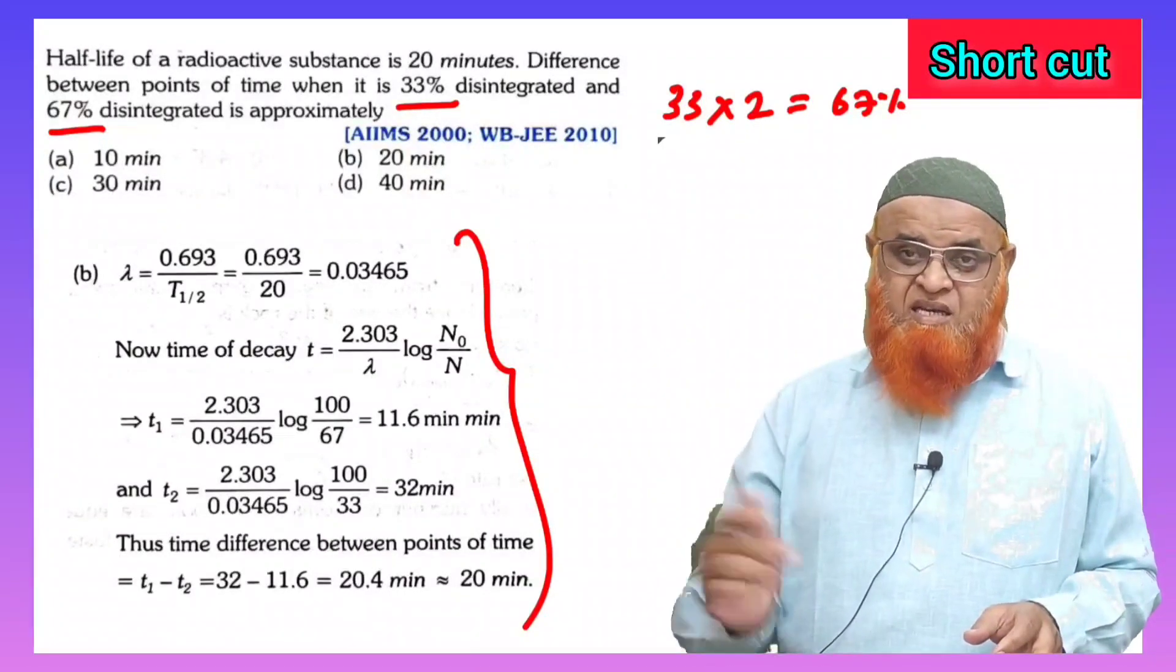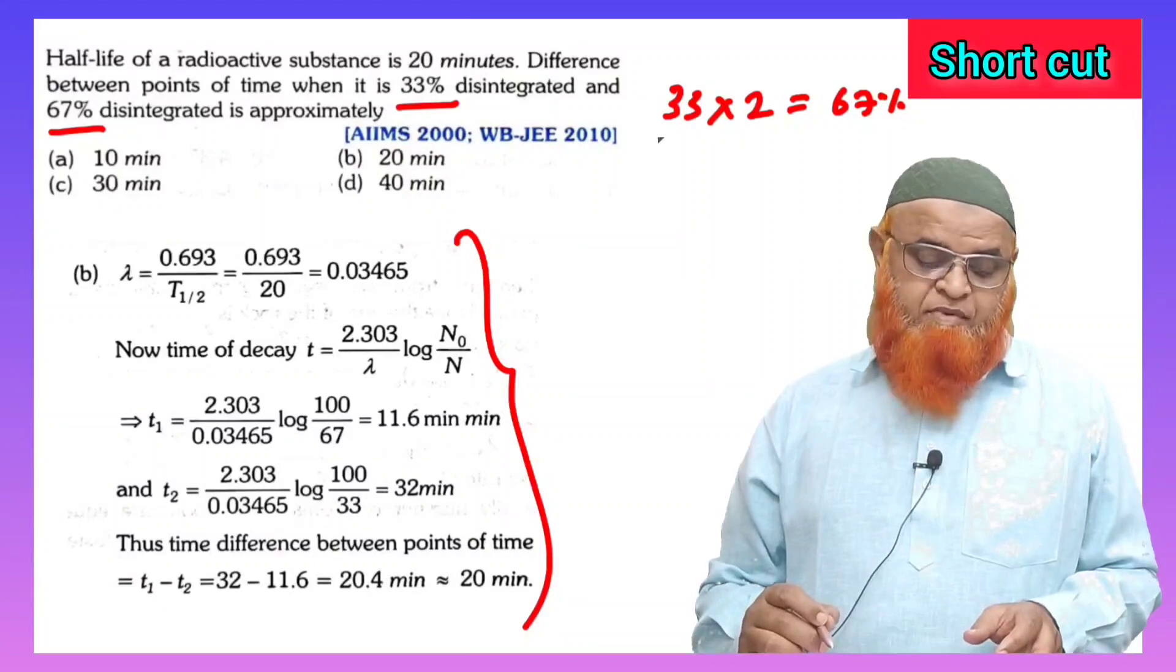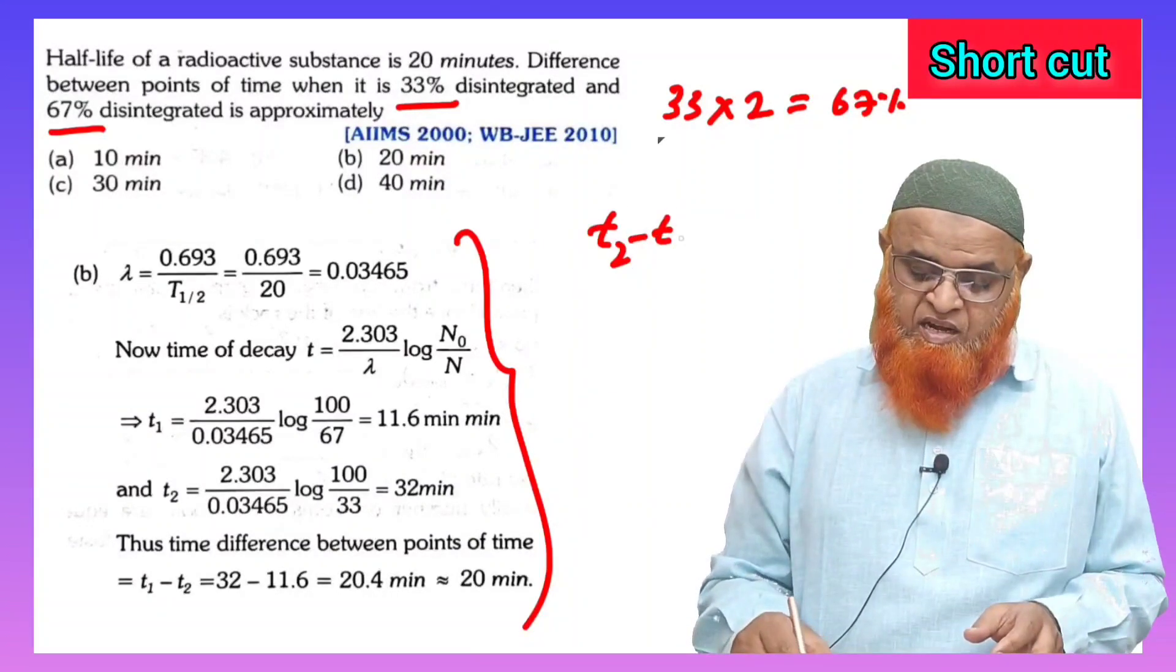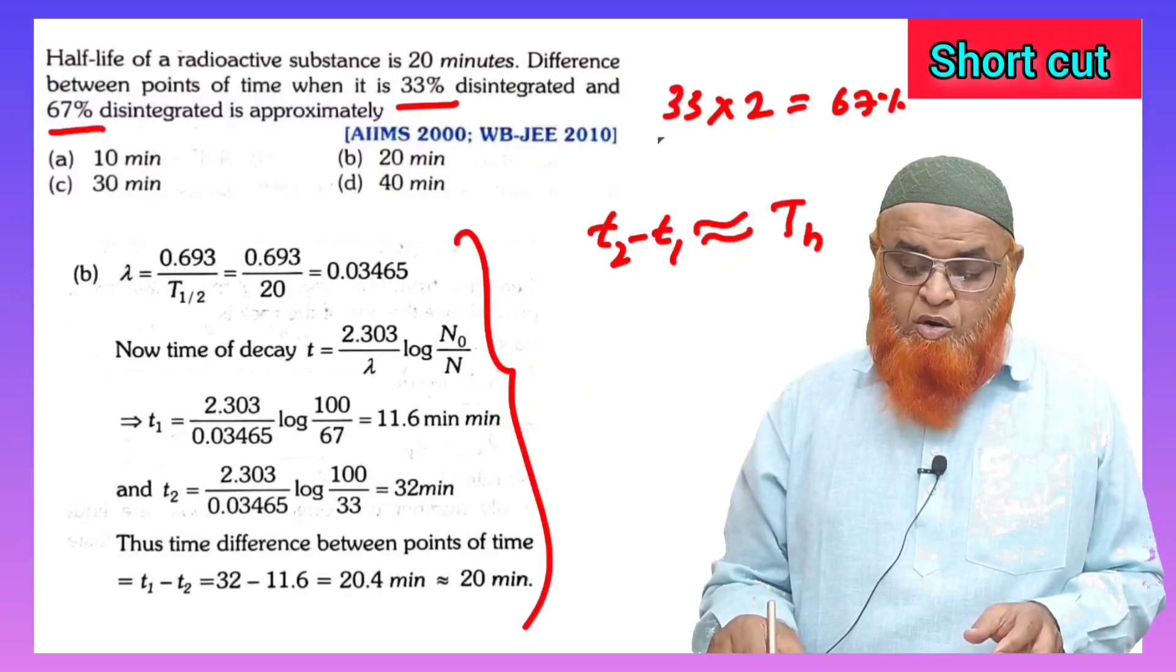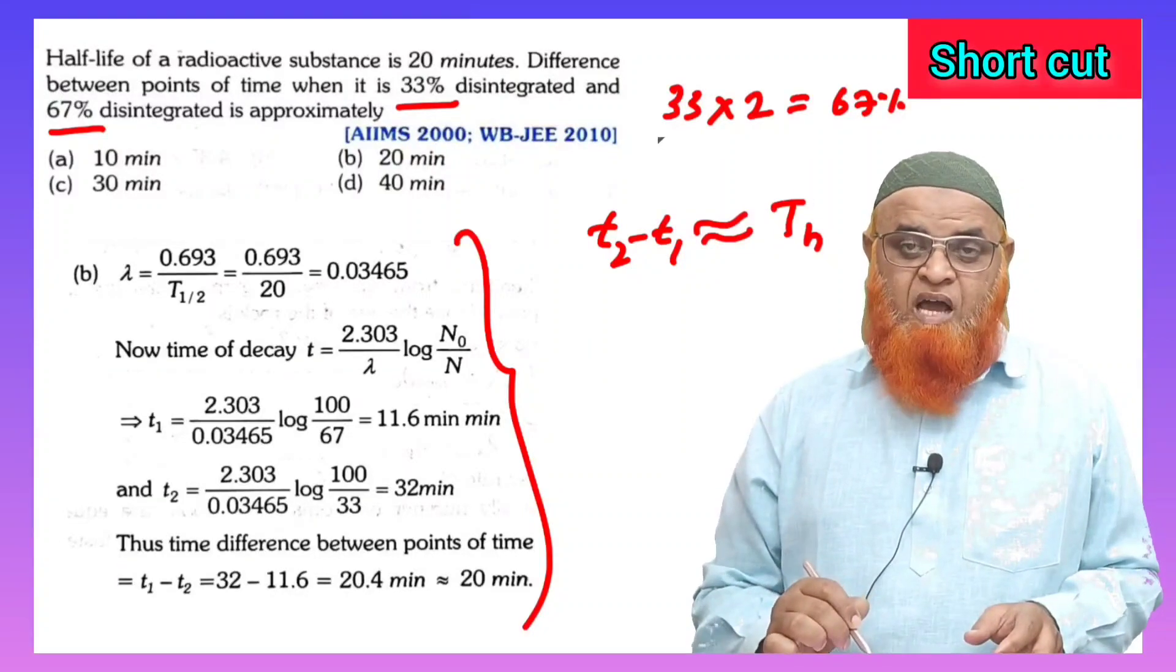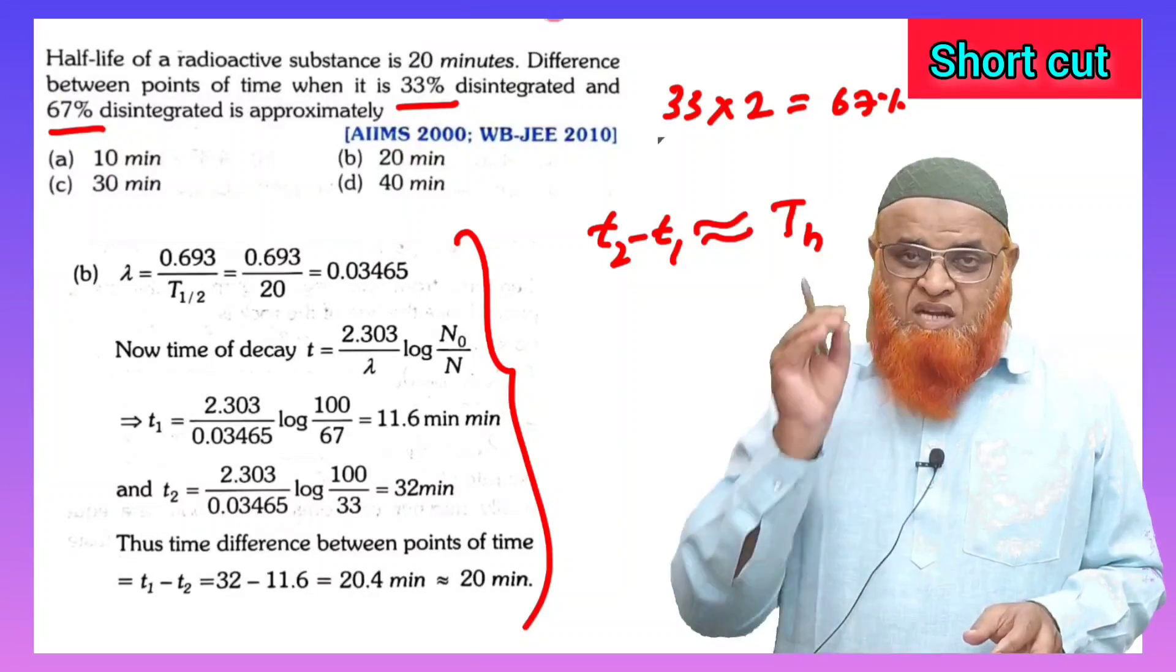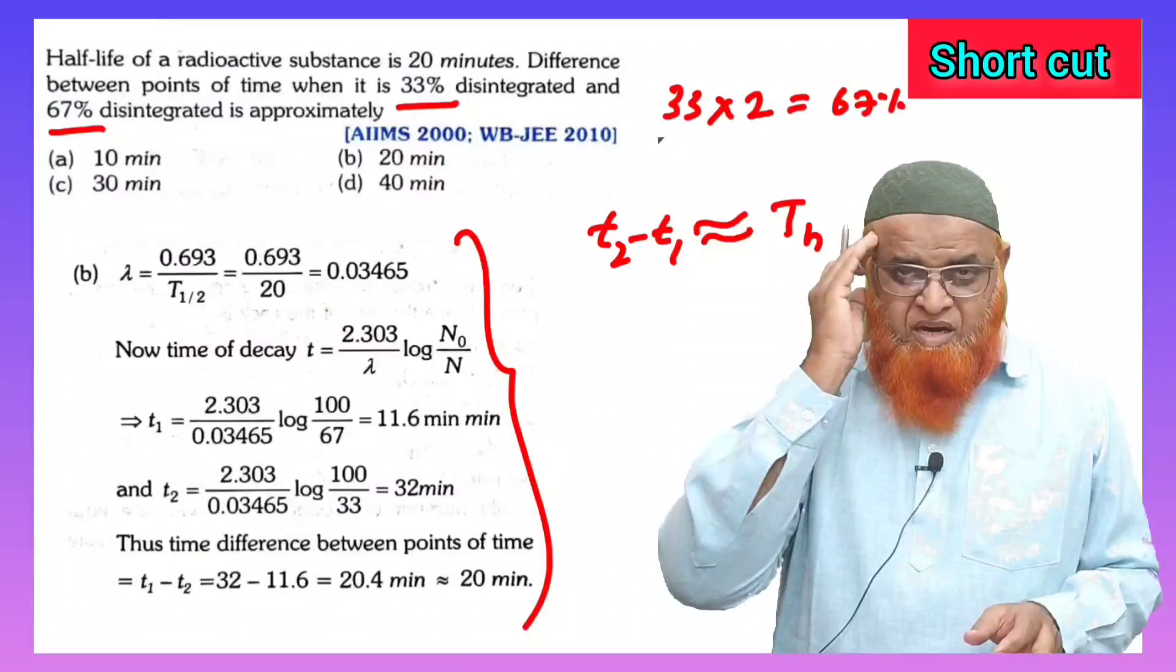that of the other, then what happens? The answer is the time interval, that is t2 minus t1, is going to be approximately equal to half-life period or half-life time. So the condition which you have to remember